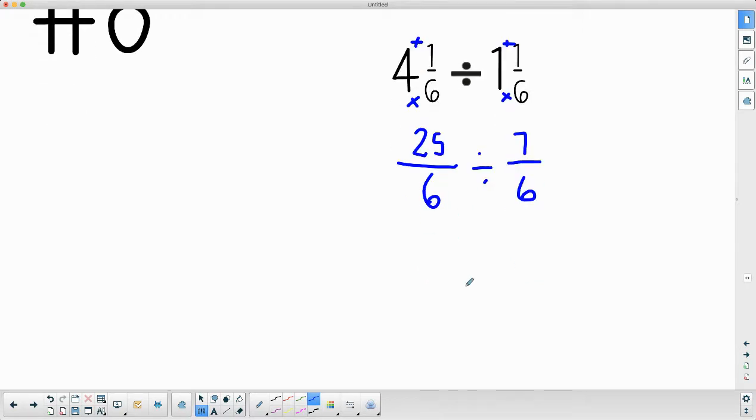Now to divide, we need to copy, dot, and flop. So then we'll multiply our numerators and our denominators. But before we do that, I can see that a number can go into 6 and 6 to simplify that and make it easier to do. And then just check for any simplifying that you can do at the end.